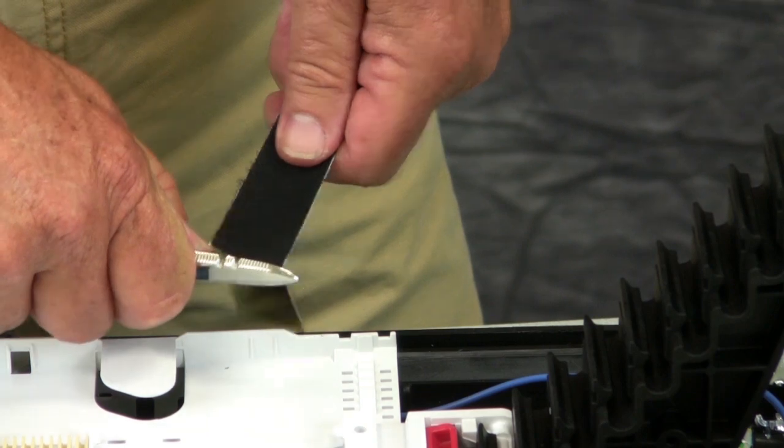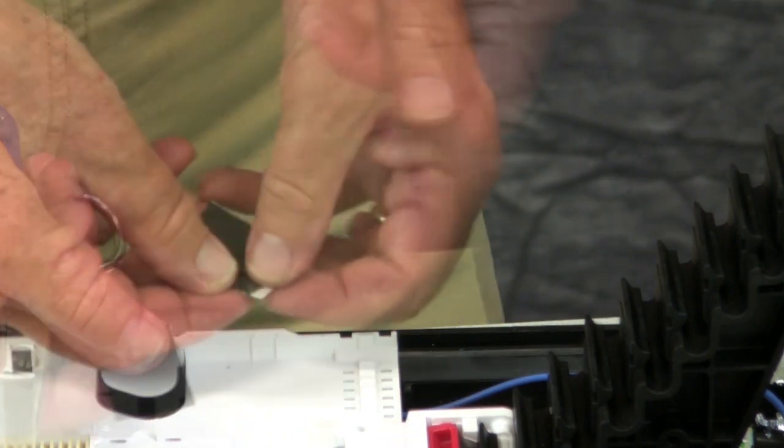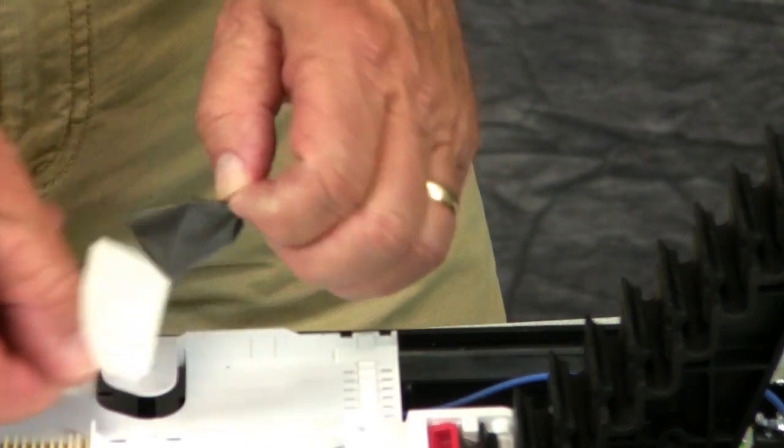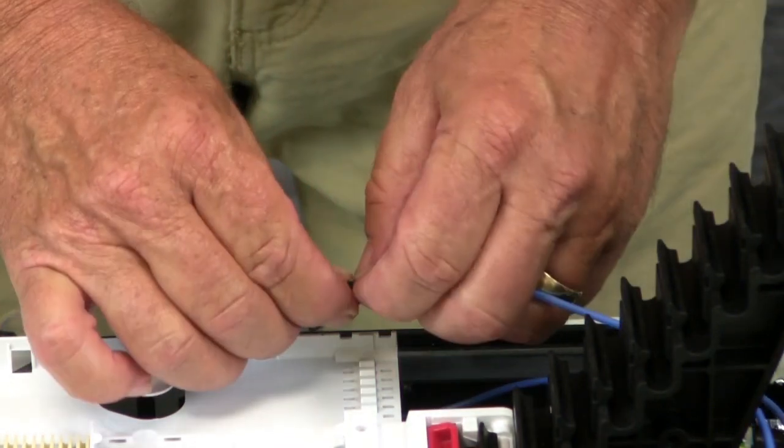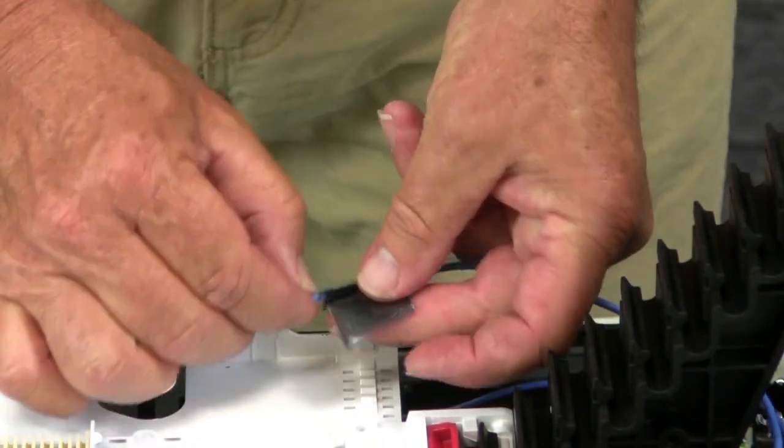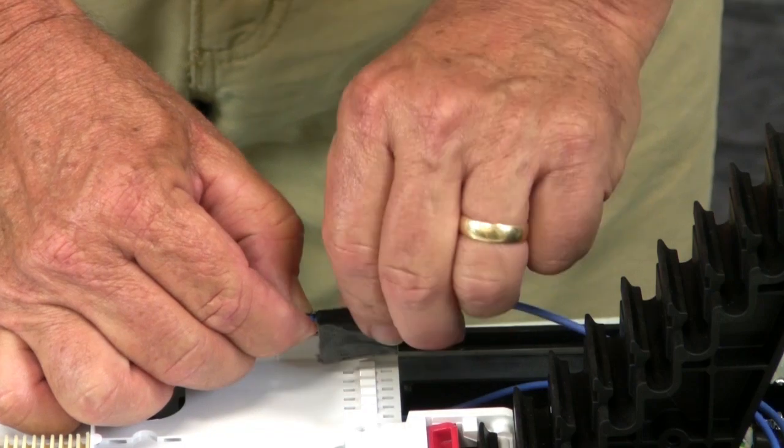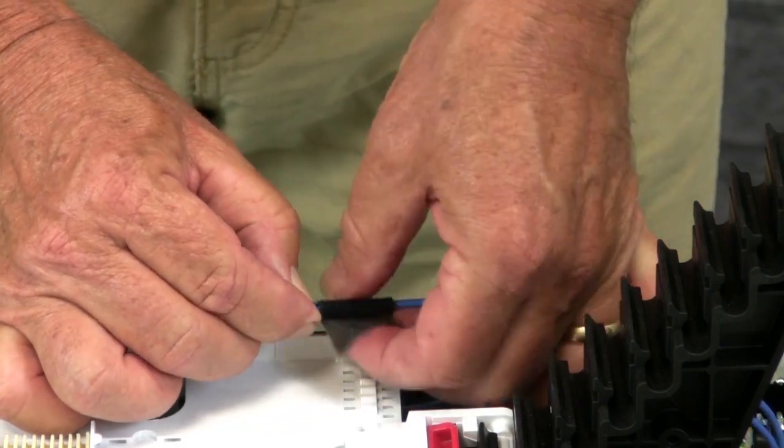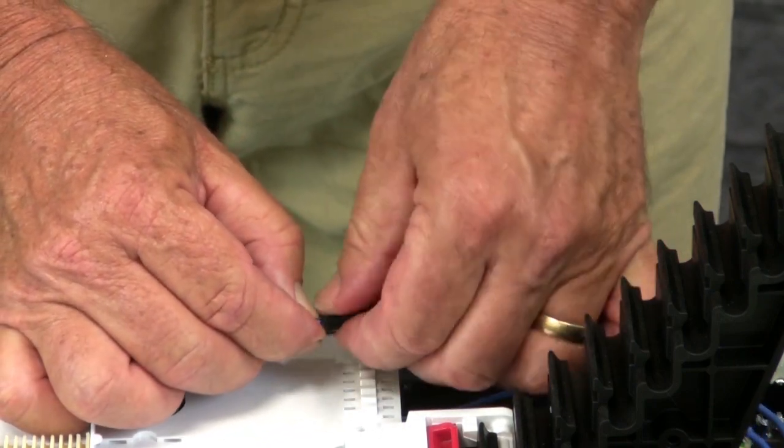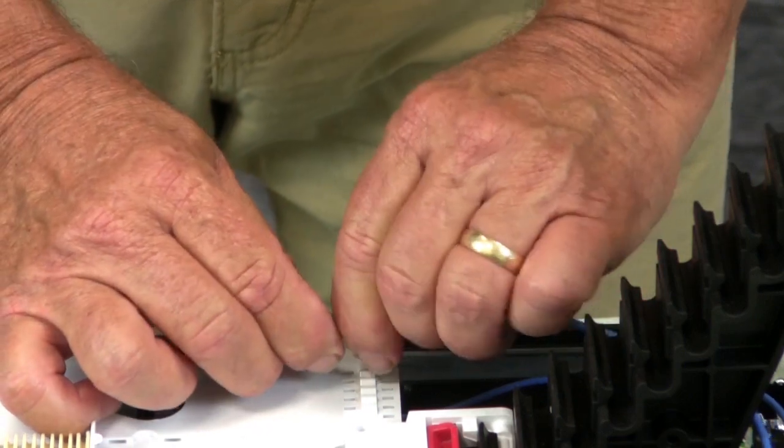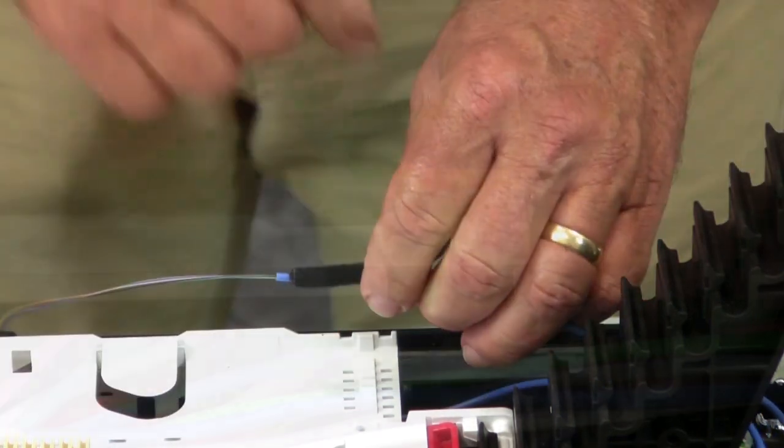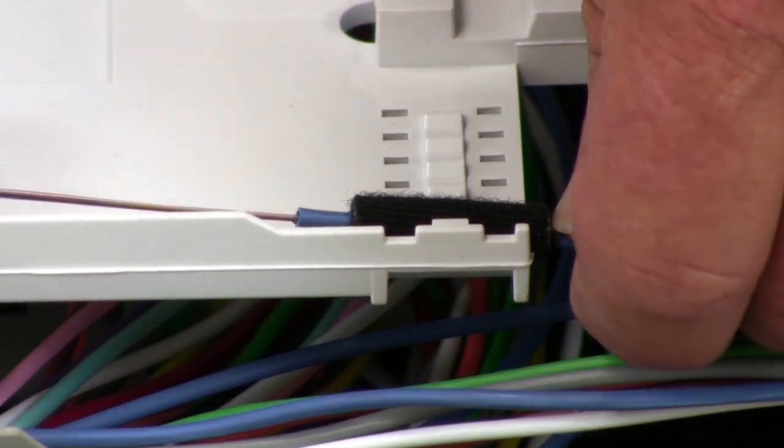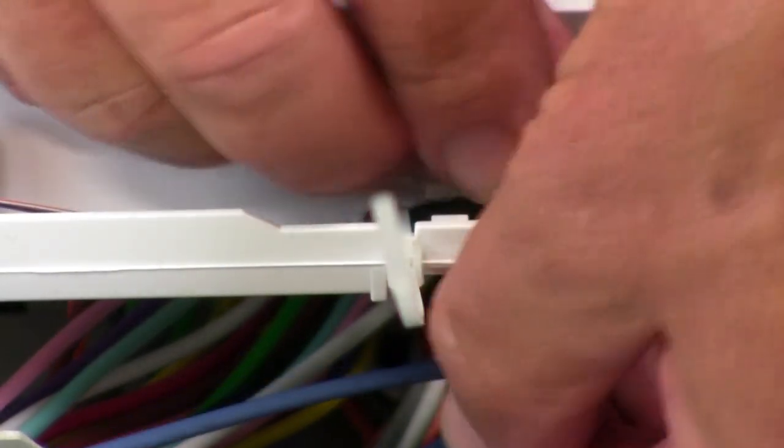Cut a section of buffer tube wrap and wrap it around each buffer tube to be attached to the splice tray. Place the buffer tube in the tray and tie wrap it to the tray.